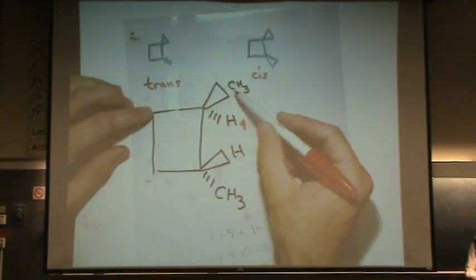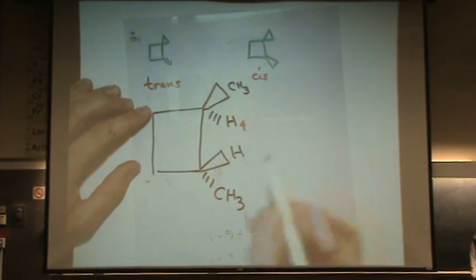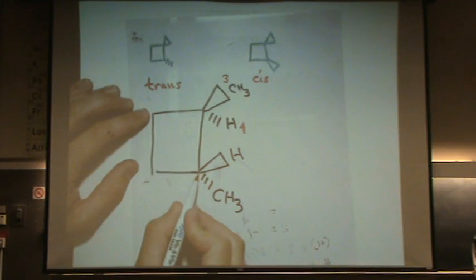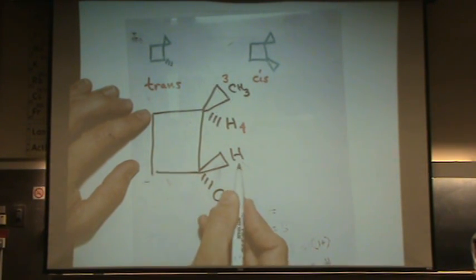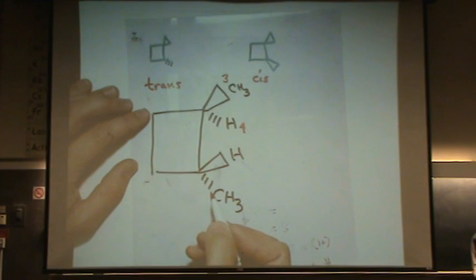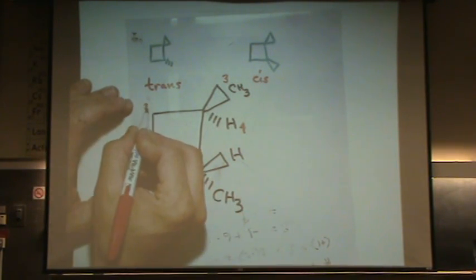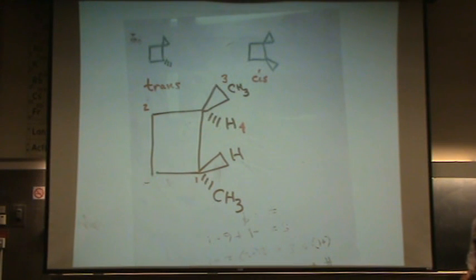So you go to the next point of difference. Well, this carbon has all H's, but these carbons have other carbons, so this has got to be three. Now, these carbons with other carbons, this one has two H's on it, but this one on the lower right only has one H on it and it has another carbon. So this is the highest priority, and this is the second-highest priority.